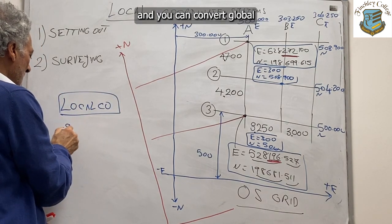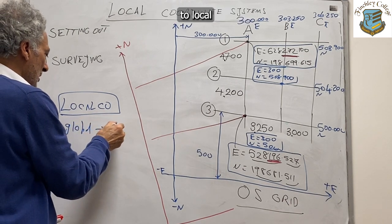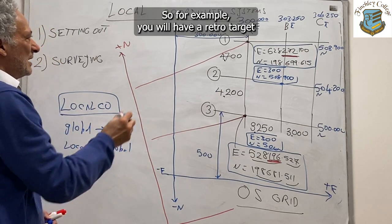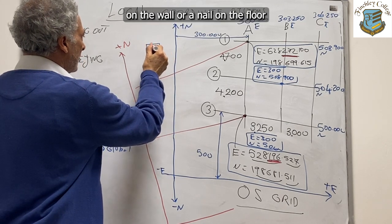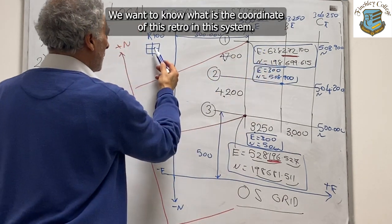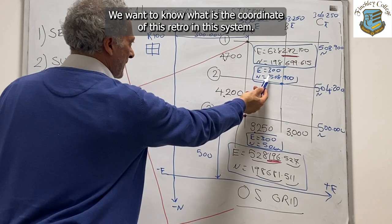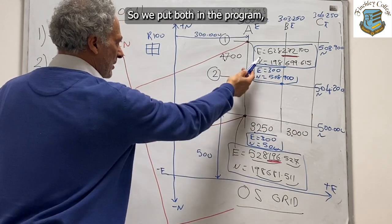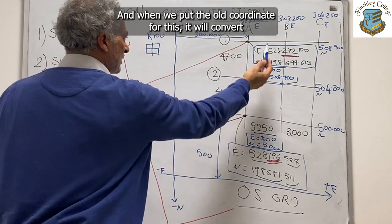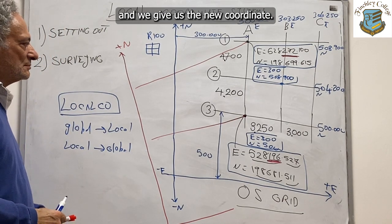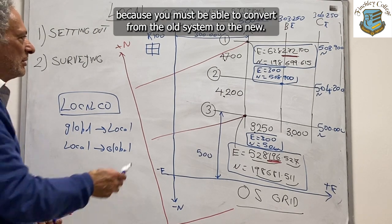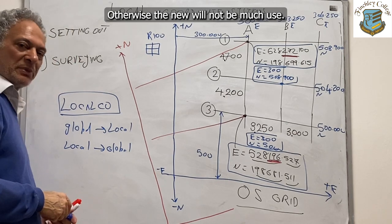We have a program which handles the local coordinate system and you can convert global to local or local to global. For example, you will have a retro target on the wall or a nail on the floor. You want to know what the coordinate of that retro is in the new system. You will put both point coordinates — old and new — into the program, and it will convert and give you the new coordinate. That is how we create a local coordinate system, because you must be able to convert from the old system to the new, otherwise the new will not be much use.